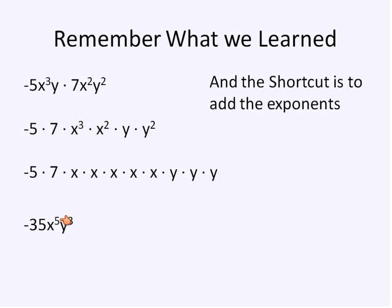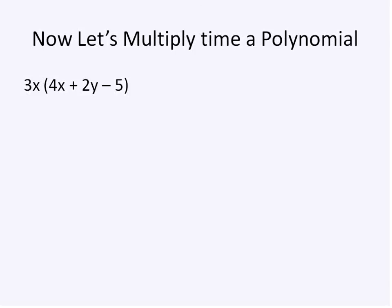x to the power of 3 plus x squared, 3 plus 2 is 5. Y, this is an implied y to the power of 1 times y to the power of 2, 1 plus 2 is 3. And the numbers get multiplied. Negative 5 times positive 7 is negative 35. So we are going to do this over and over when we multiply monomial times polynomials. I just want to show that as a quick reminder.